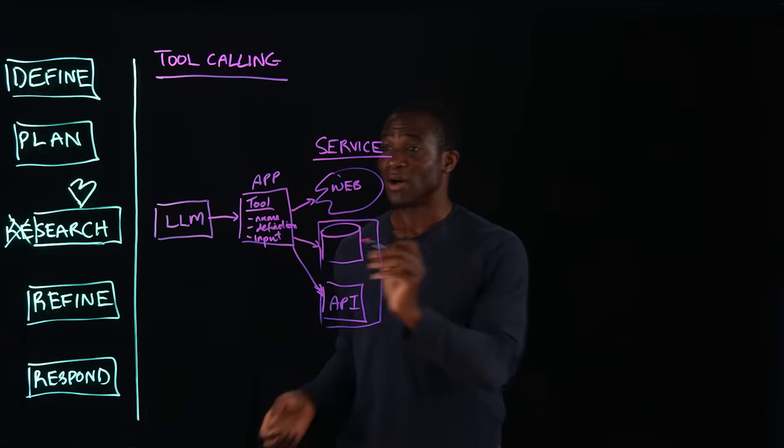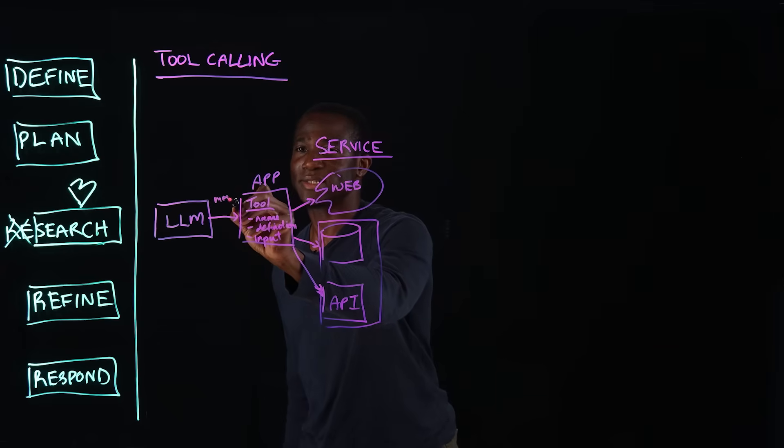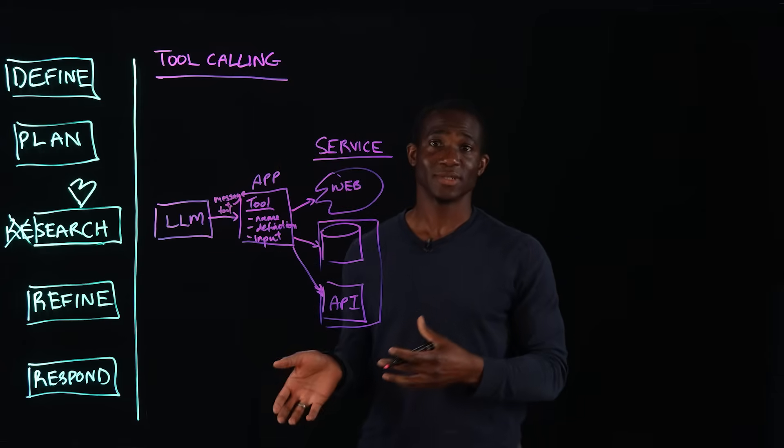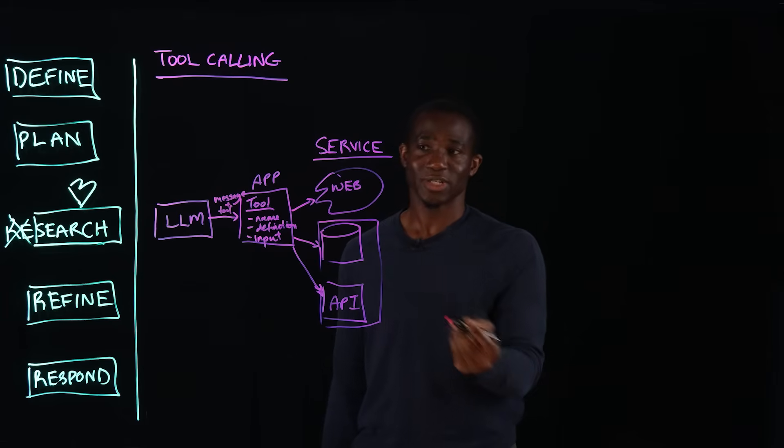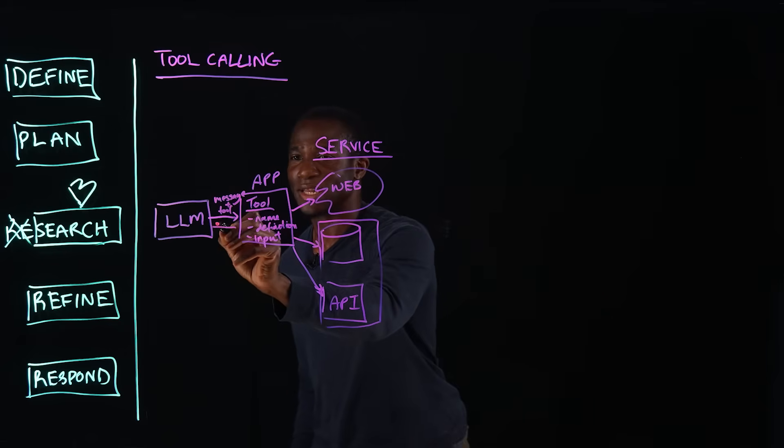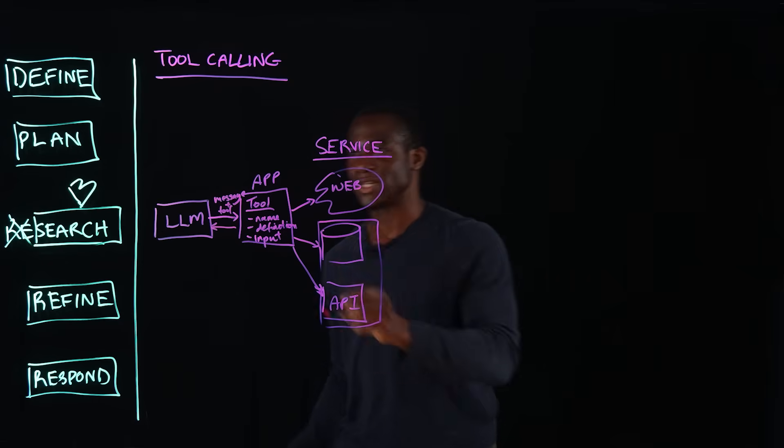Now, how the LLM does this is it sends in response to a query, it sends a message and also a tool name to the application, then the application routes this request, formats and routes this request to the appropriate service, comes back with data to the LLM, and then the LLM uses that data to generate an answer.